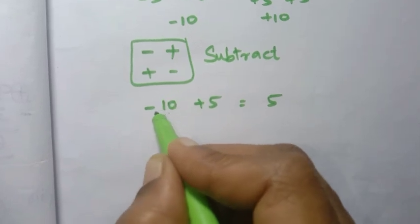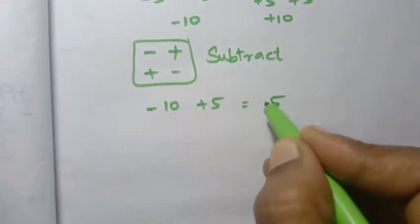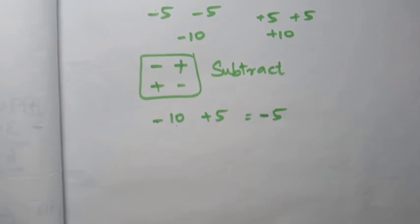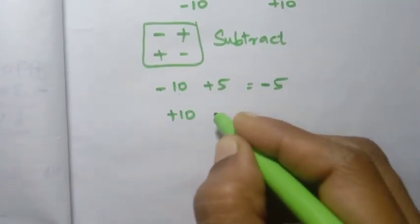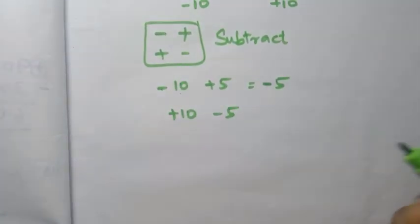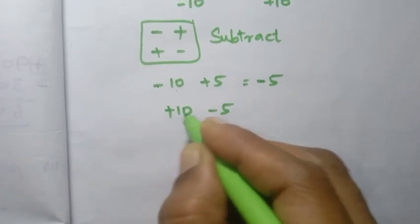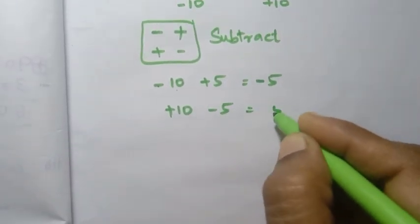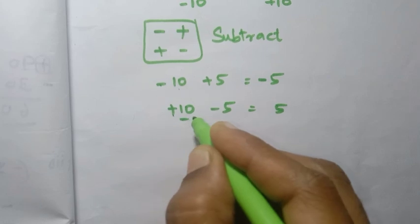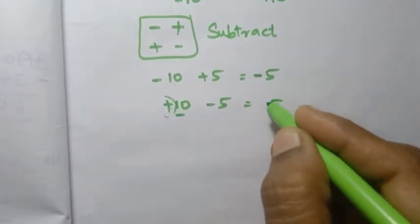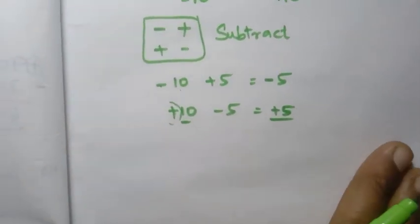The highest value sign determines the answer sign. So if the highest value has a minus sign, the answer is minus. For example, plus 10 minus 5: different signs, so we subtract — 10 minus 5 equals 5. Highest value is 10, its symbol is plus, so the answer is plus.